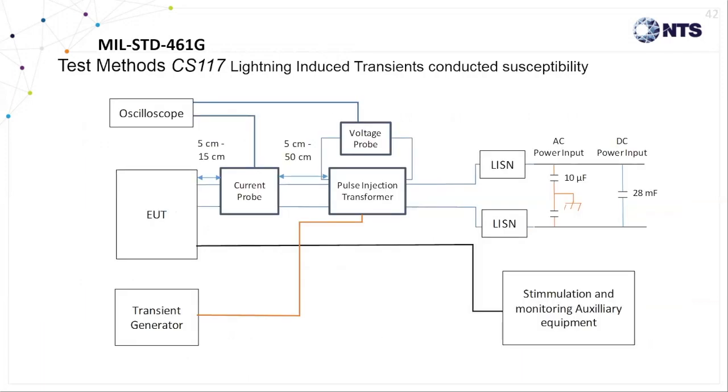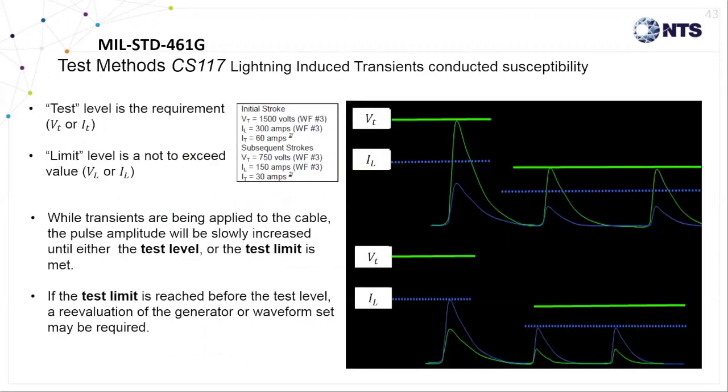The general CS117 lightning setup is shown here, with the injection transformer and current monitoring clamp positioned around a particular cable to be tested. Again, much like we saw in test methods CS114, 115, and 116. However, a high impedance voltage probe is also placed around the injection transformer to capture the applied voltage waveform as well.